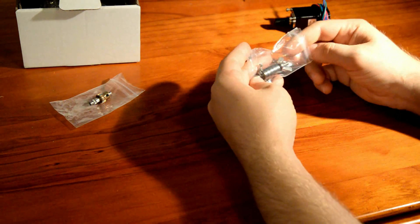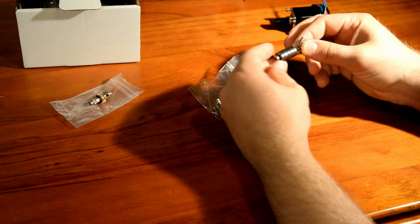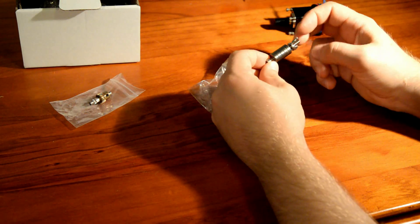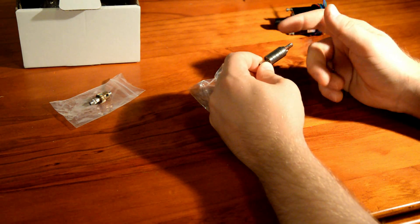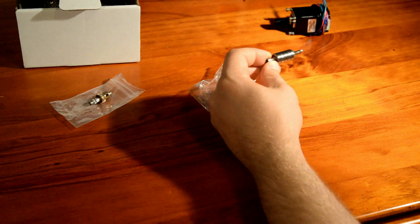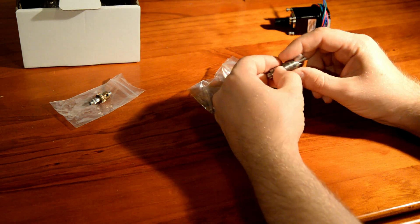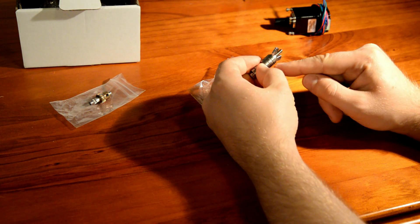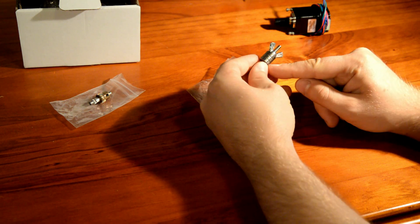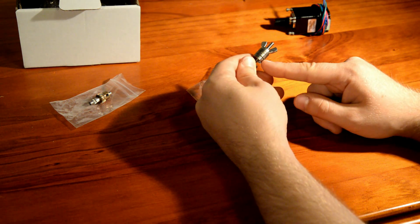And then the last bag has just various hardware. We've got the M4 idler bolt and the thumb screw and the bearings here. So three of these go on the extruder itself. Two of them for the drive shaft. One is the crush bearing.